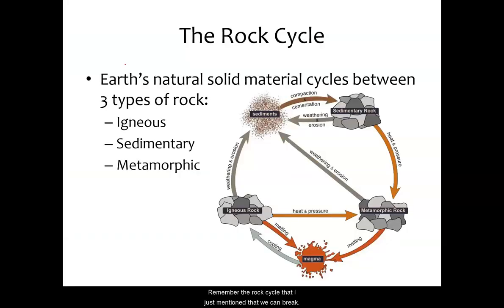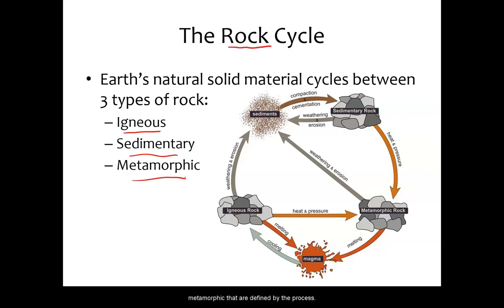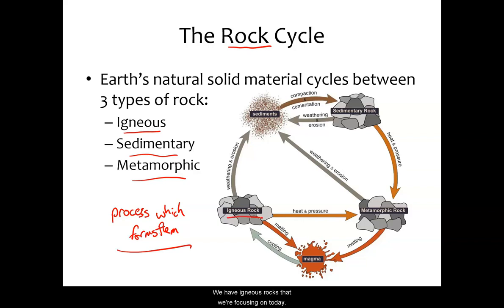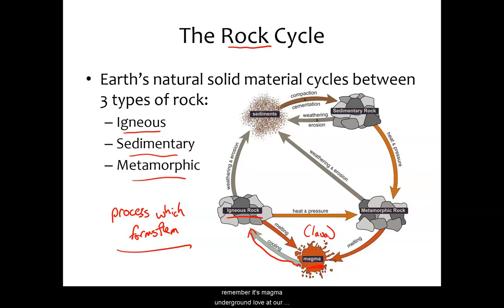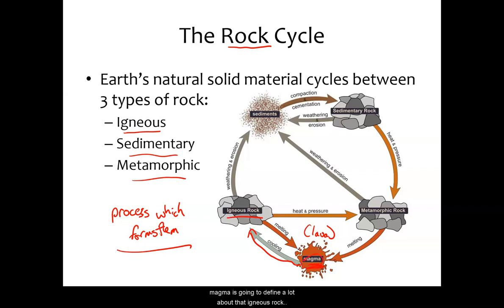Remember the rock cycle that I just mentioned — we can break the types of rocks down into igneous, sedimentary, and metamorphic, defined by the process which forms them. We have igneous rocks that we're focusing on today. The key arrow here is cooling of magma, or lava at Earth's surface. Remember it's magma underground, lava at Earth's surface. So first we've got to melt some other rock, turn it into liquid rock material — it's not a rock because it's liquid. Then we cool it and we get an igneous rock. That process of cooling, and the stuff that makes up the magma, is going to define a lot about that igneous rock.